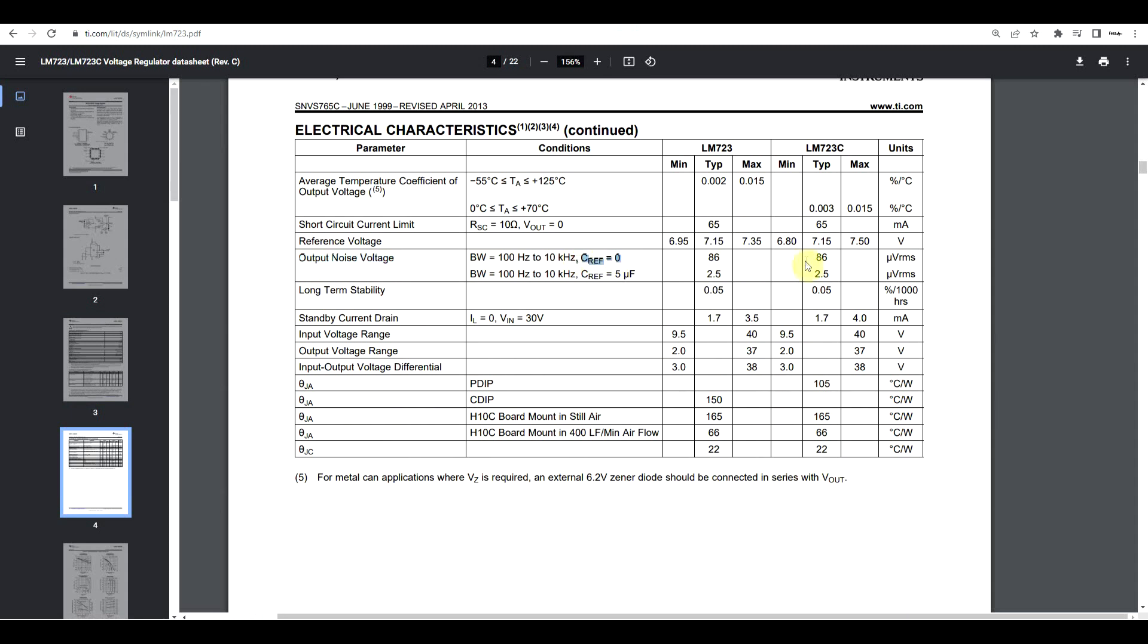Now the exact effect of this capacitor is highlighted in the datasheet section regarding output noise. So without any sort of capacitor, you're looking in the 86 microvolt RMS range, whereas with a 5 microfarad capacitor, this significantly drops down to 2.5 microvolts. So for the specified bandwidth, with or without this capacitor, you should see a massive difference in output noise. Now, reference filtration is not always possible with other ICs, but when it is, it's important to take into consideration.